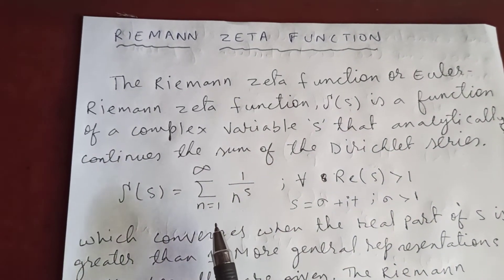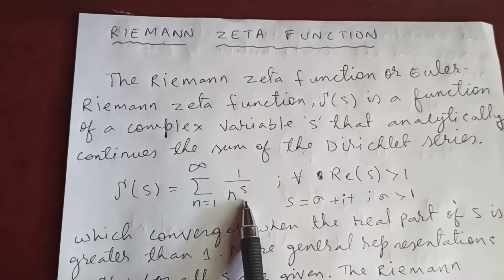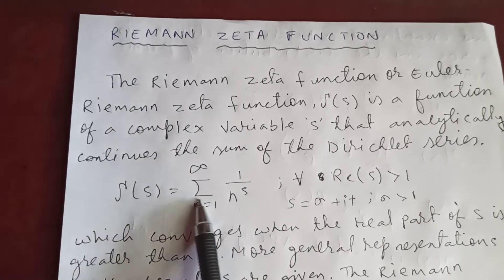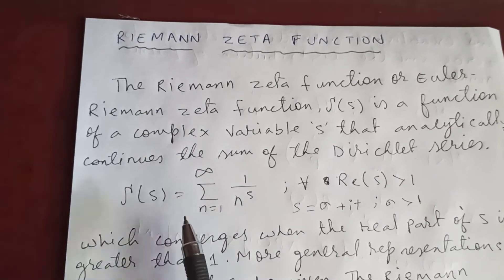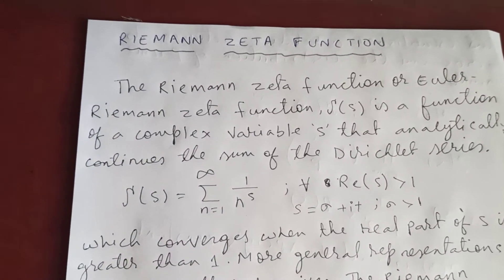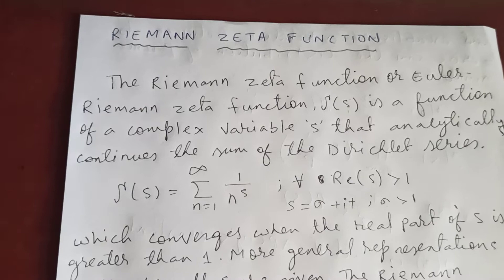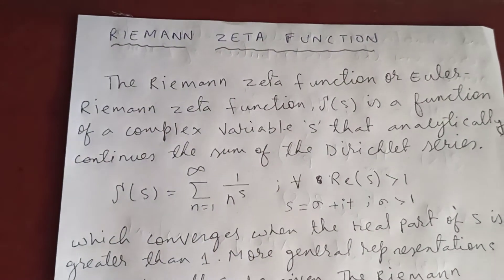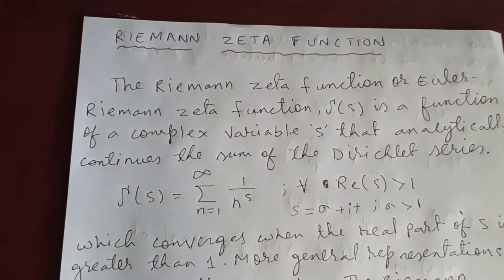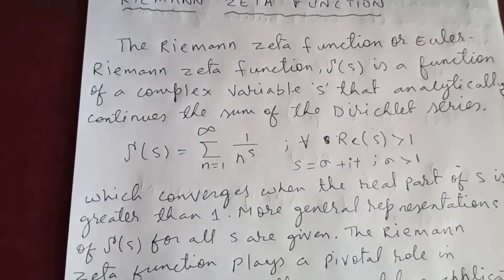If the real part of s is equal to 1, then this Riemann zeta function will not converge. It will be divergent series.